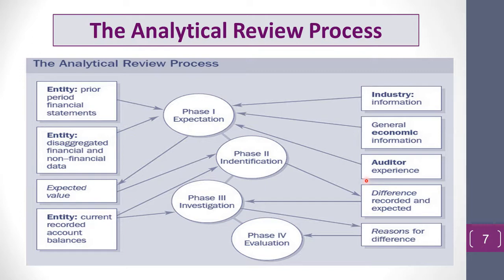In phase three, Investigation, the auditor investigates possible explanations for differences between expected and recorded values. The auditor first asks management for an explanation, but must maintain professional skepticism — always questioning and remaining critical. Understanding the industry helps the auditor understand reasons for differences related to industry conditions. The auditor gathers more evidence to identify the causes of these patterns or errors in financial statements, which also provides guidance for further testing.